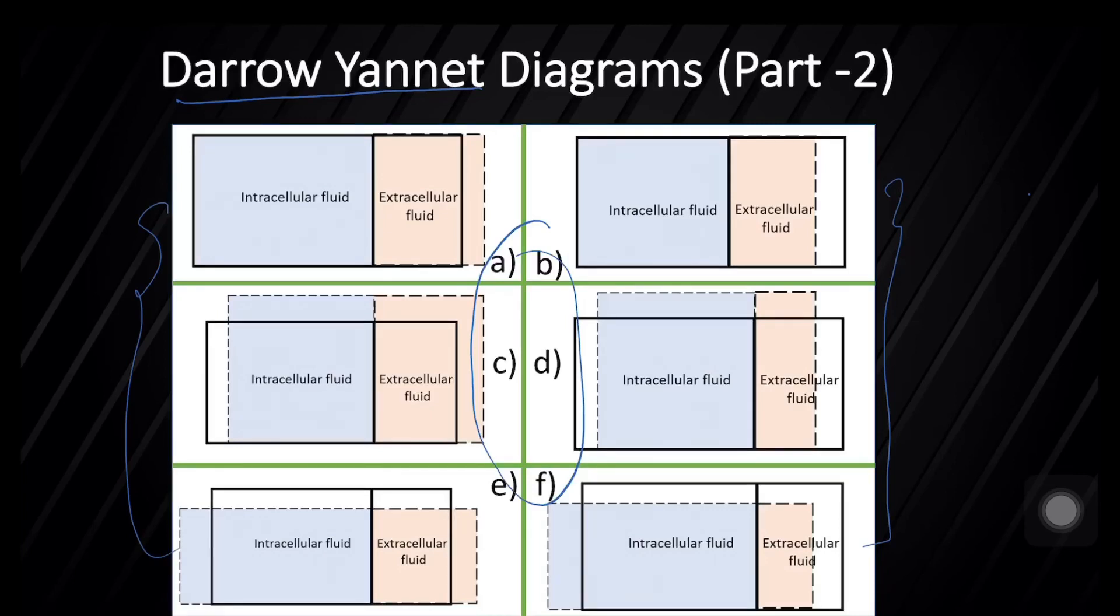When we say volume expansion and contraction, we specifically refer to the extracellular fluid volume. The solid line represents the original volume and the dotted line shows the changes in various conditions.